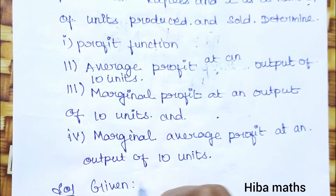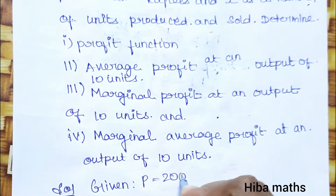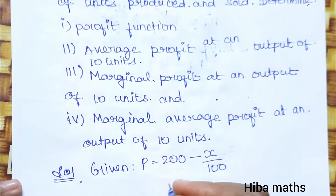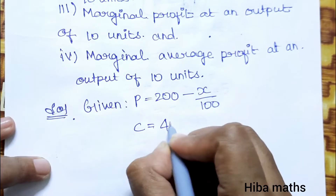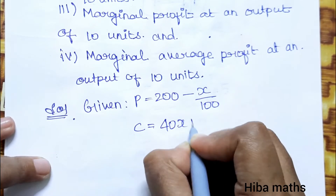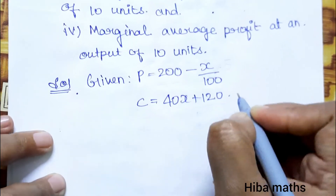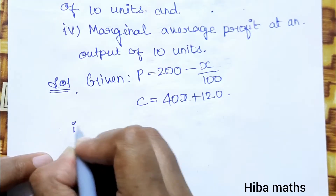Given: p = 200 - x/100 and c = 40x + 120.